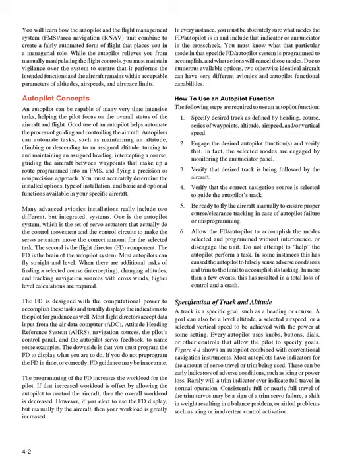How to Use an Autopilot Function. The following steps are required: 1. Specify desired track as defined by heading, course, series of waypoints, altitude, airspeed, and/or vertical speed. 2. Engage the desired autopilot functions and verify that the selected modes are engaged by monitoring the enunciator panel. 3. Verify that desired track is being followed by the aircraft. 4. Verify that the correct navigation source is selected to guide the autopilot's track. 5. Be ready to fly the aircraft manually in case of autopilot failure or misprogramming.